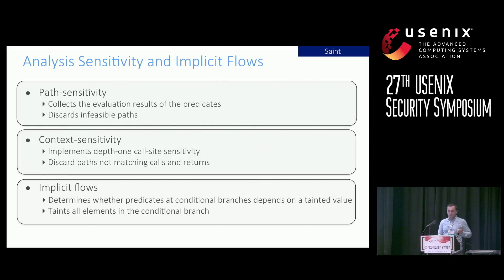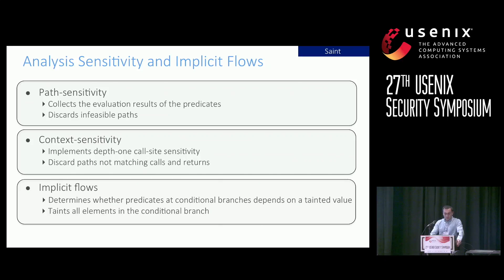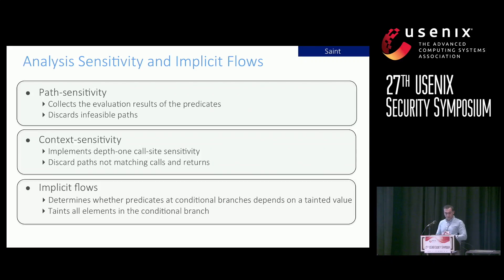SAINT's backward flow tracking is both path-sensitive and context-sensitive. For path sensitivity, SAINT collects evaluation results of predicates at conditional branches, then checks whether the conjunction of these predicates always evaluates to false. If so, the path is infeasible and discarded. For context sensitivity, SAINT discards paths that do not match function calls and returns using one-call-site sensitivity. Additionally, SAINT considers implicit flows by checking the condition of a conditional branch to determine whether it depends on a taint value — if so, it taints all elements in the conditional branches.